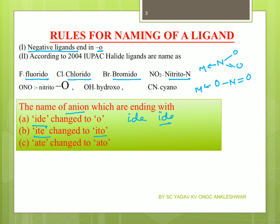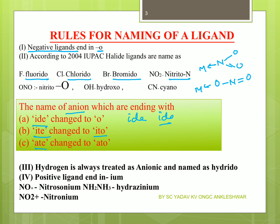So if the negative ligand ending is -IDE → change to -IDO; -ITE → -ITO; -ATE → -ATO. You will apply this for anions. Hydrogen is always considered an anionic ligand and written as hydrido.